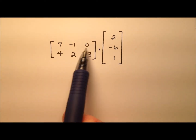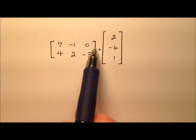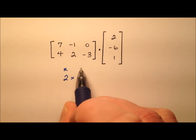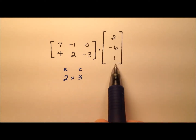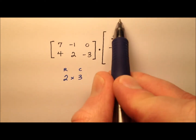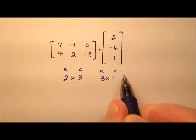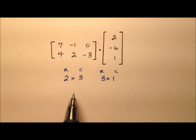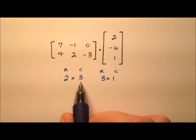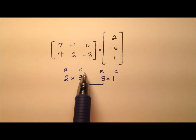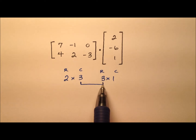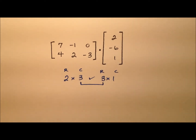Here we have a two by three matrix — it has two rows and three columns. And here it looks like we have a column matrix with three rows and one column. In order to be able to do this multiplication — or in other words, for this multiplication to be defined — the number of columns in the first matrix has to equal the number of rows in the second matrix. You can see here that this first matrix has three columns and the second has three rows, so these two inner dimensions are the same, and we can indeed do the multiplication.